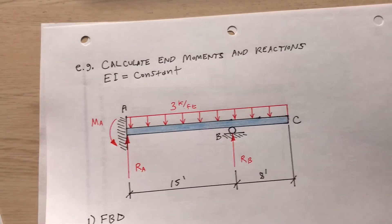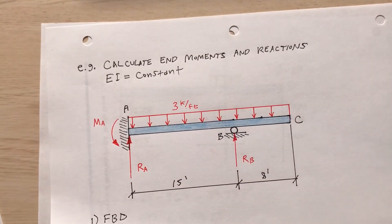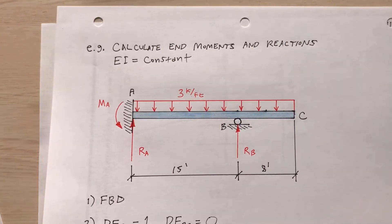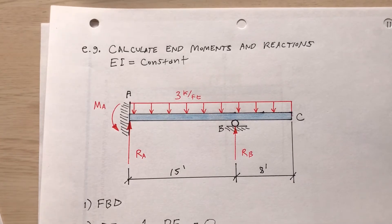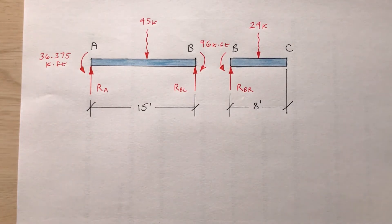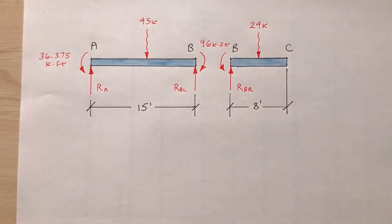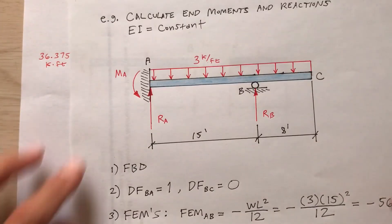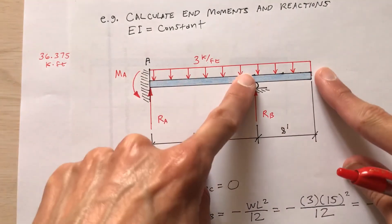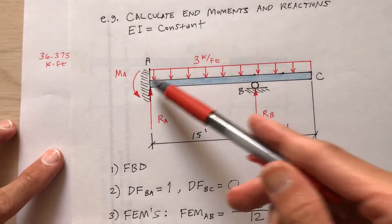You'll break it up into two segments like this. Between A and B, between B and C. A to B, B to C. Between A and B, that's three kips per foot times 15 foot.